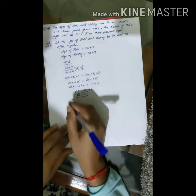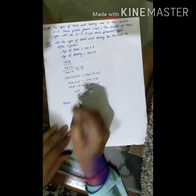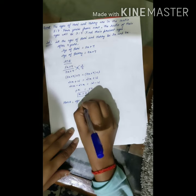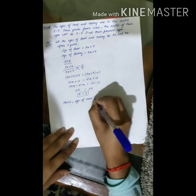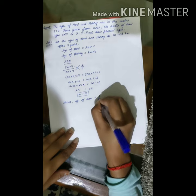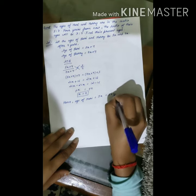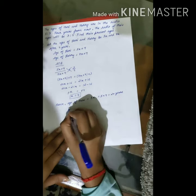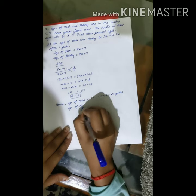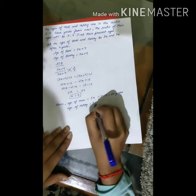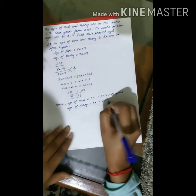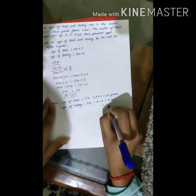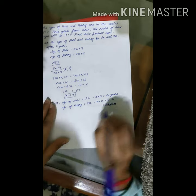This is the value of x, but we have to convert the ratio back to their original ages. Age of Hari = 5x = 5 × 4 = 20 years. Age of Harry = 7x = 7 × 4 = 28 years. This is our answer.